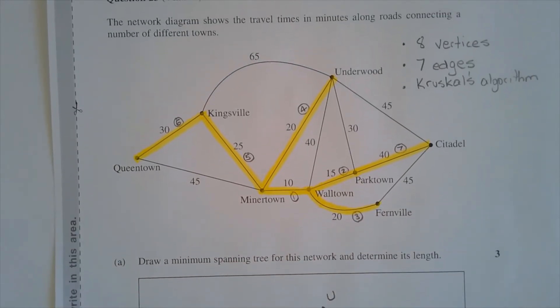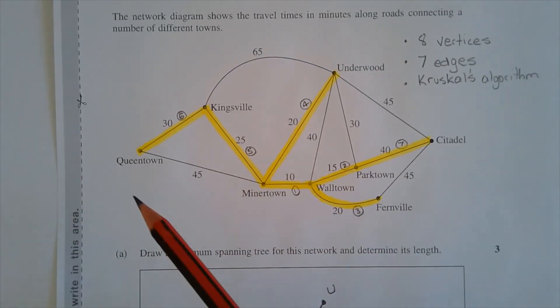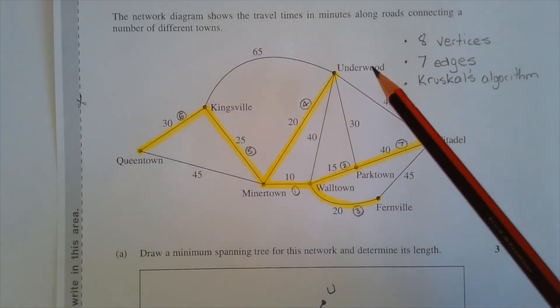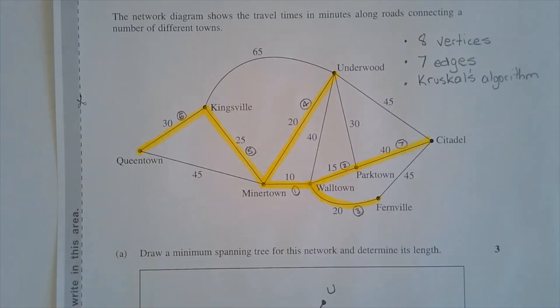Referring to the original network diagram, we can see that there's many ways to go from Queen Town to Underwood. And you need to select the path that is shortest or the one that takes the least amount of time.